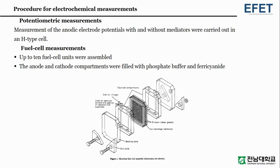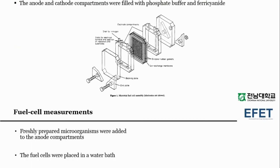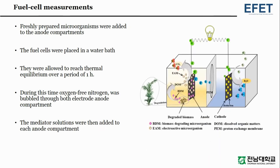Now I would like to discuss the procedure for electrochemical measurements. For potentiometric measurements, measurement of the anodic electrode potentials with and without mediators were carried out in an H-type cell. For fuel cell measurements, up to 10 fuel cell units were assembled. The anode and cathode compartments were filled with phosphate buffer and ferrocyanide.